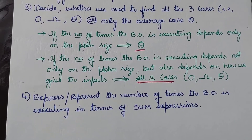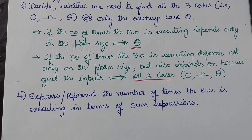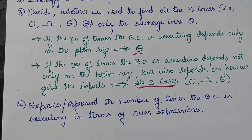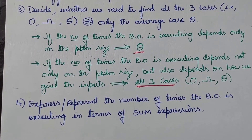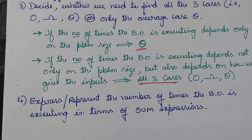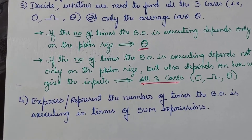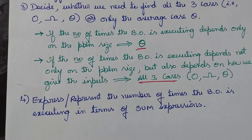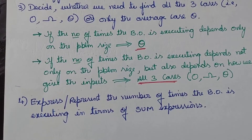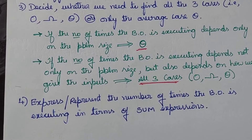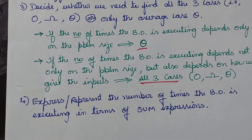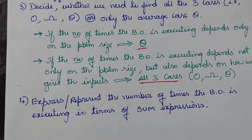The fourth step is to express or represent the number of times the basic operation is executing in terms of summation expressions. The number of times the basic operation executes needs to be written as a summation expression.